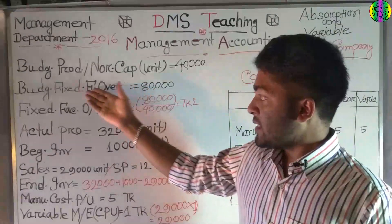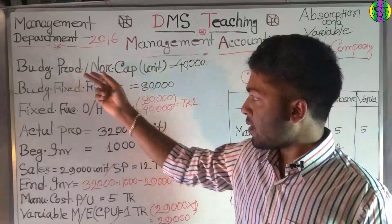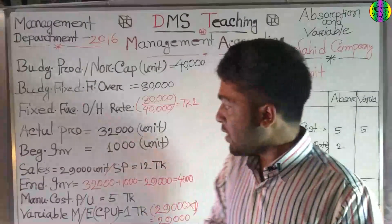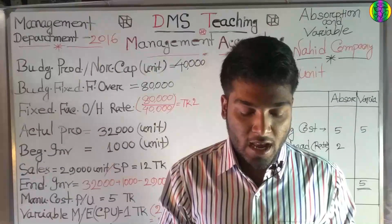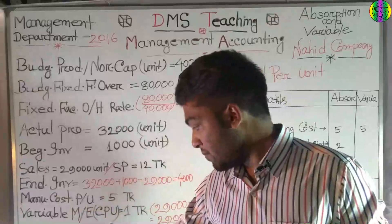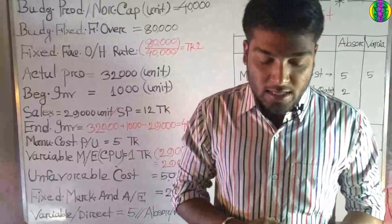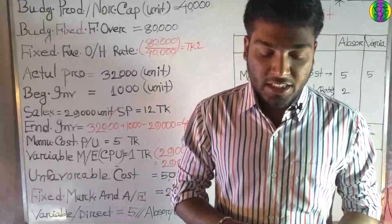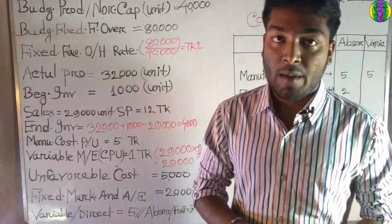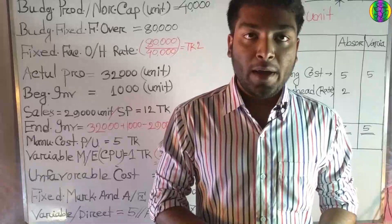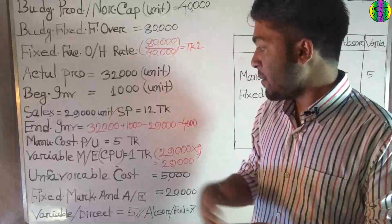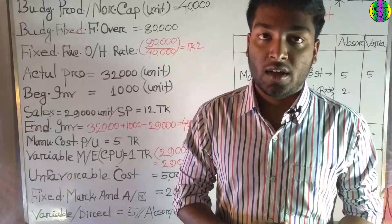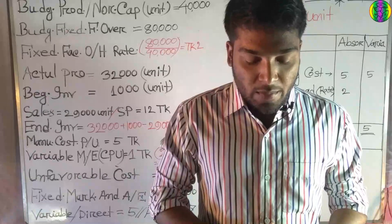The budgeted fixed factory overhead is $8,000. The budgeted production unit is 1,814 units. There are fixed marketing and administrative expenses. The sales price per unit is $12. The standard variable manufacturing cost per unit and the variable selling and marketing expense per unit are also provided as part of the cost data.